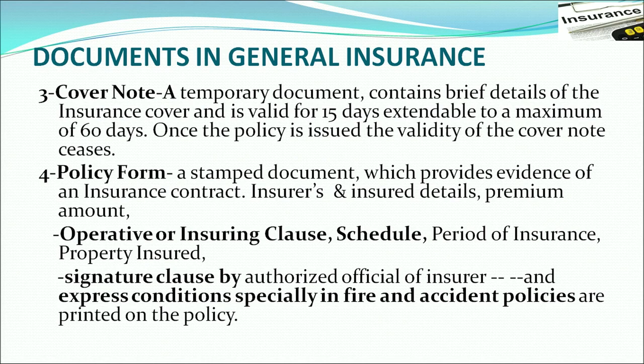The policy form is a stamped document that provides evidence of an insurance contract. It mentions the insurer's and insured's details, the premium amount, and the operative clause — which specifies the event covered, such as death, maturity, or survival after a set period. The schedule discusses the different rates and conditions of premium and the mode of premium payment.